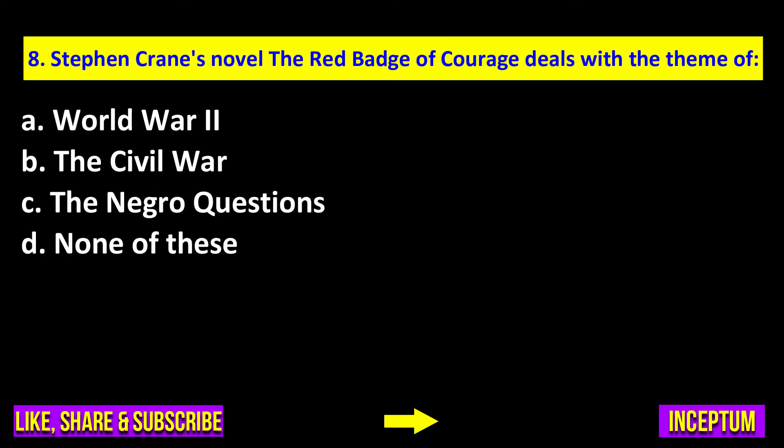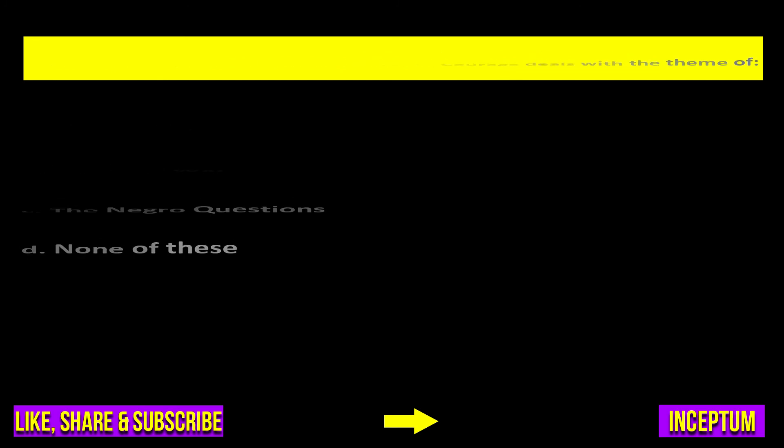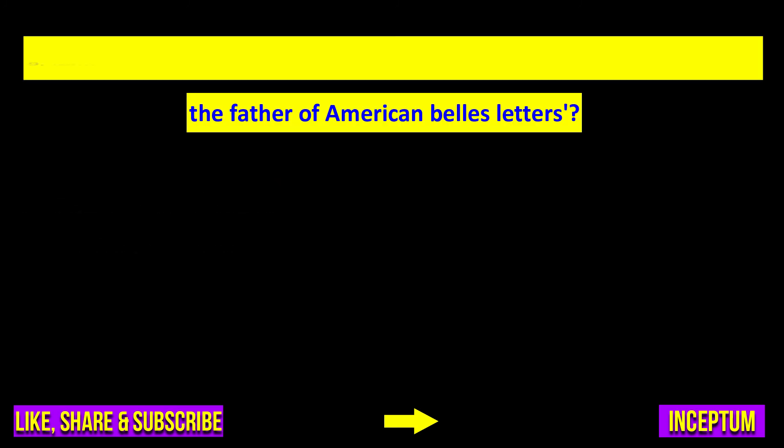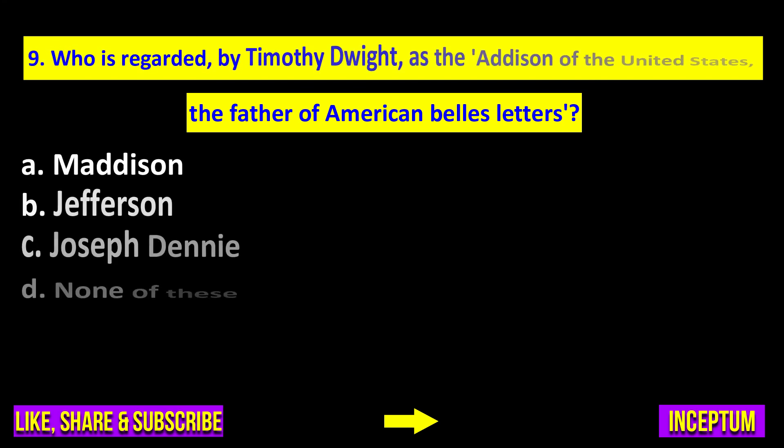Question number eight: Stephen Crane's novel 'The Red Badge of Courage' deals with the theme of — World War 2, the Civil War, the Negro question, or none of these? The right answer is option B: the Civil War.